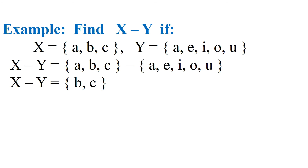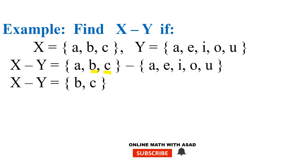Next example: find X minus Y if set X = {A, B, C} and set Y = {A, I, O, U} (set of vowels). X minus Y contains all elements of set X that are not in set Y. B and C are elements not present in Y, while A is present in both sets X and Y. So X minus Y = {B, C}.